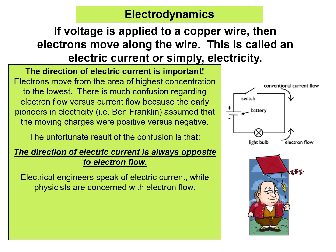Moving on to electric dynamics — 'dyno' meaning movement. If voltage is applied to a copper wire, the electrons will move along the wire; this is called an electric current, or simply electricity. A simple circuit schematic includes a source of EMF such as a battery, a resistor such as a light bulb, and a switch to control current flow.